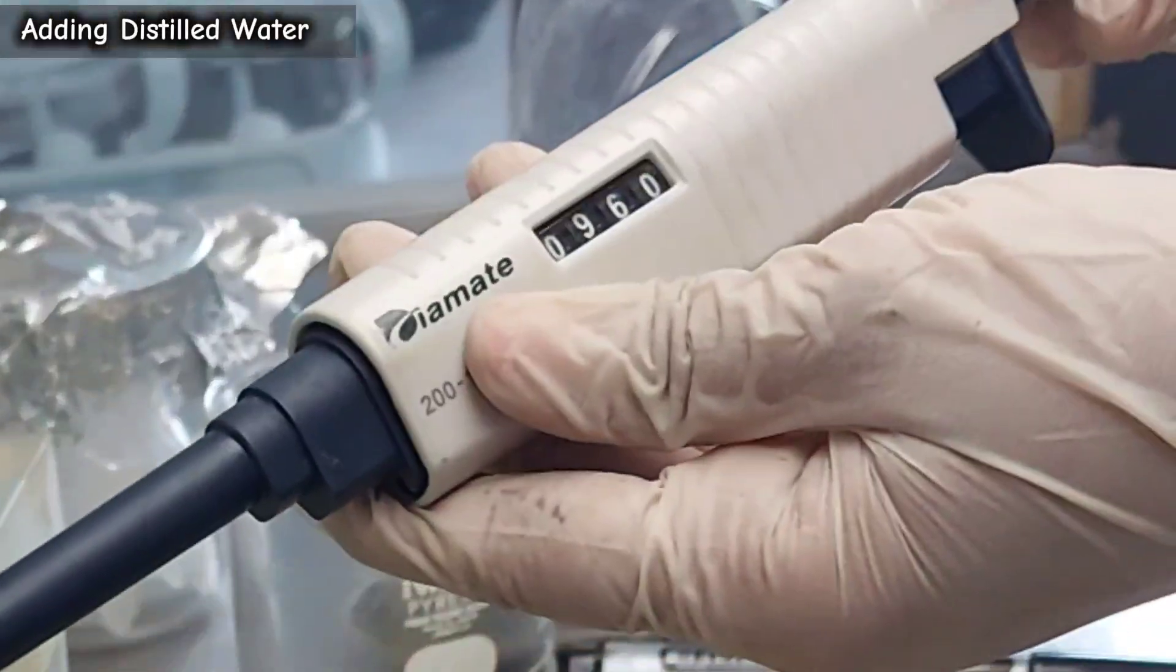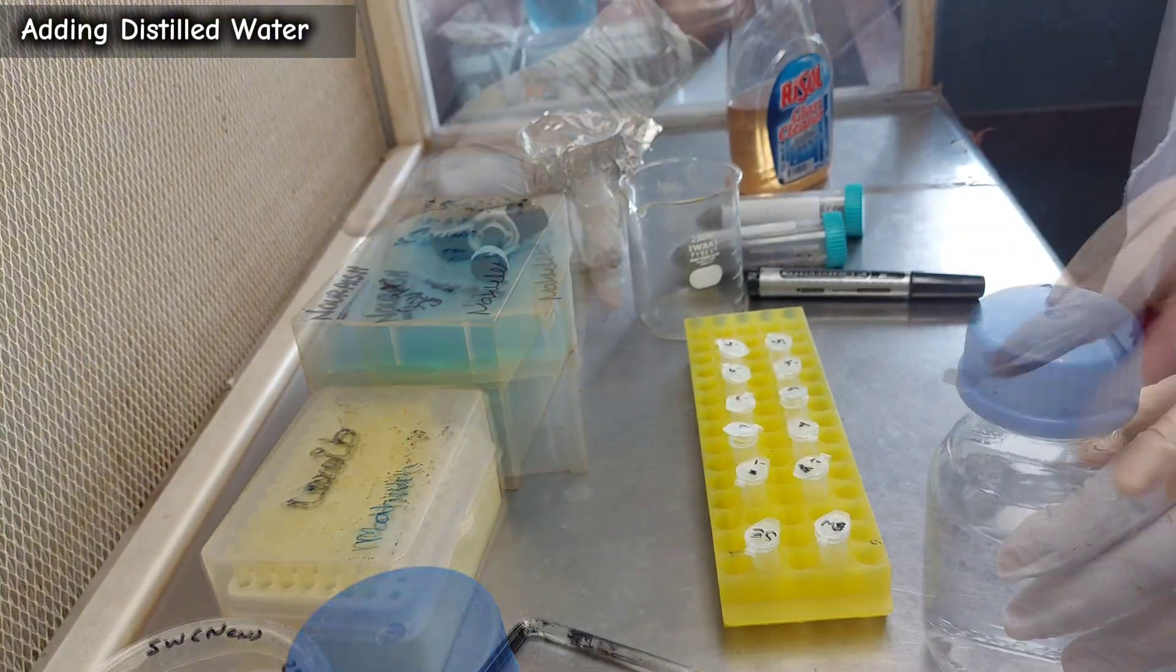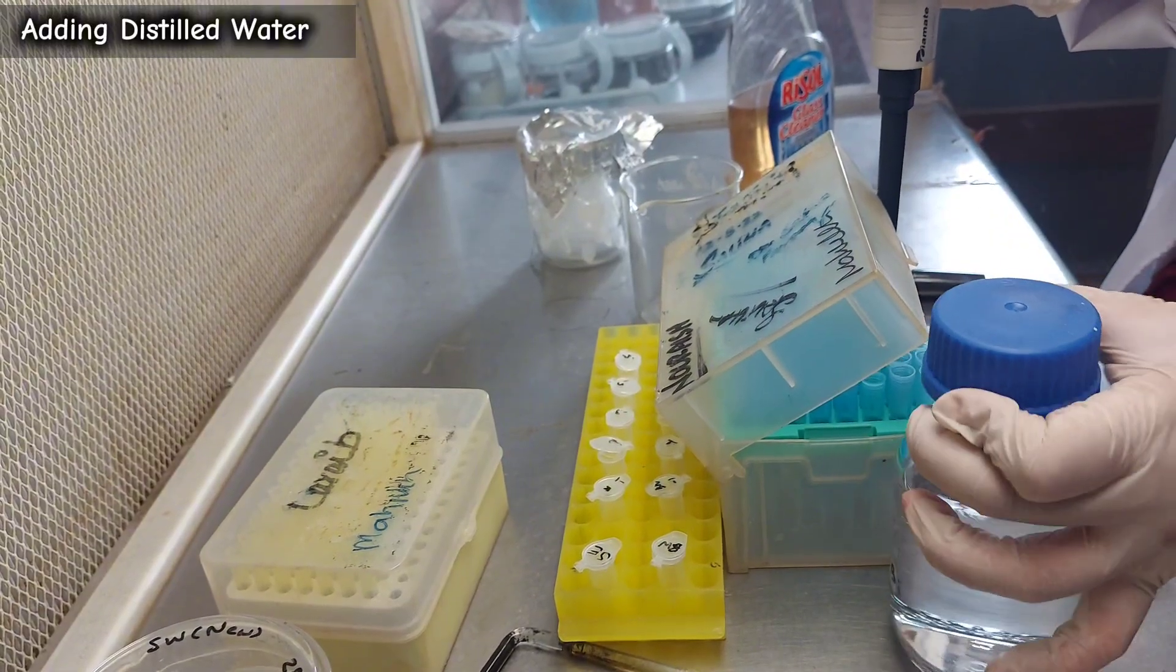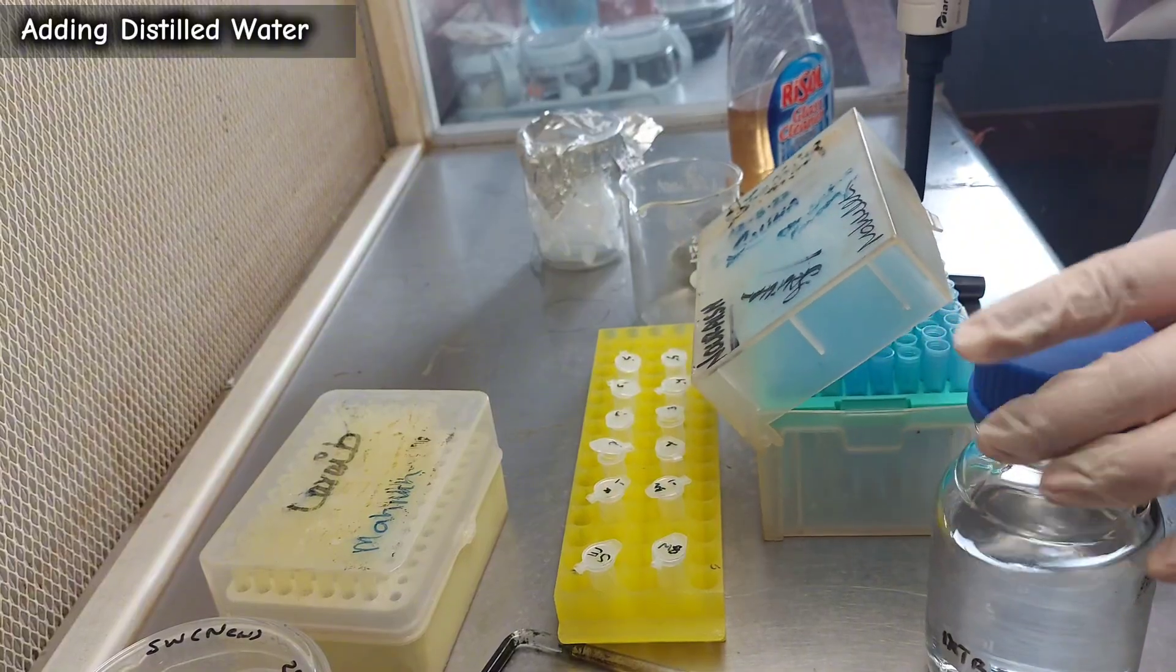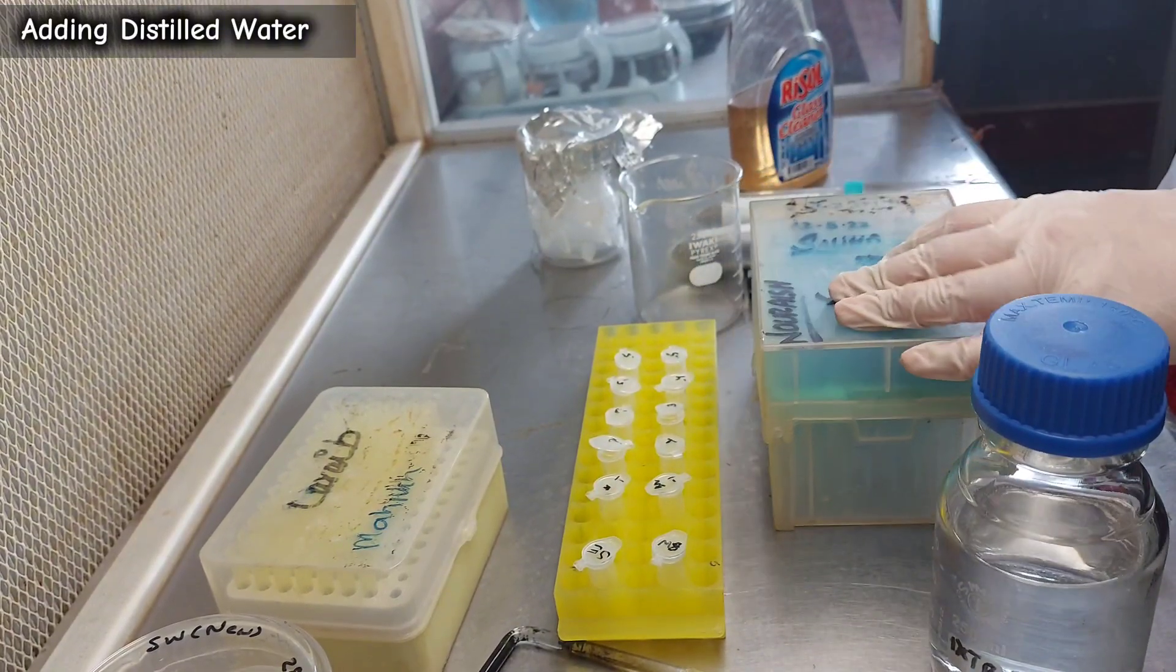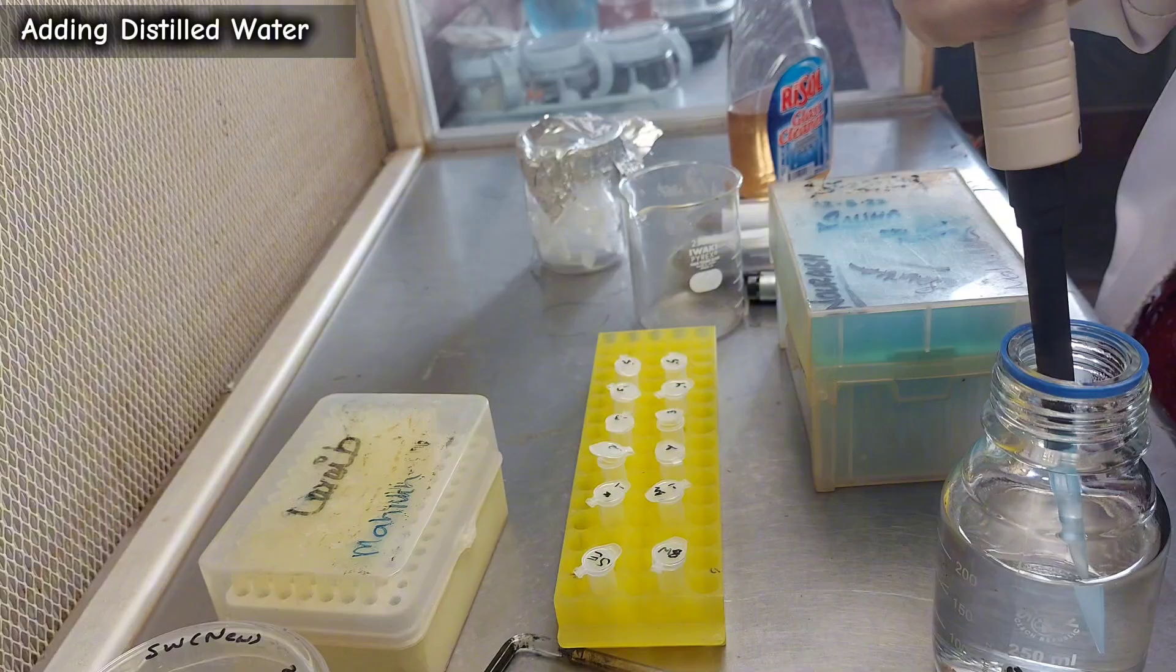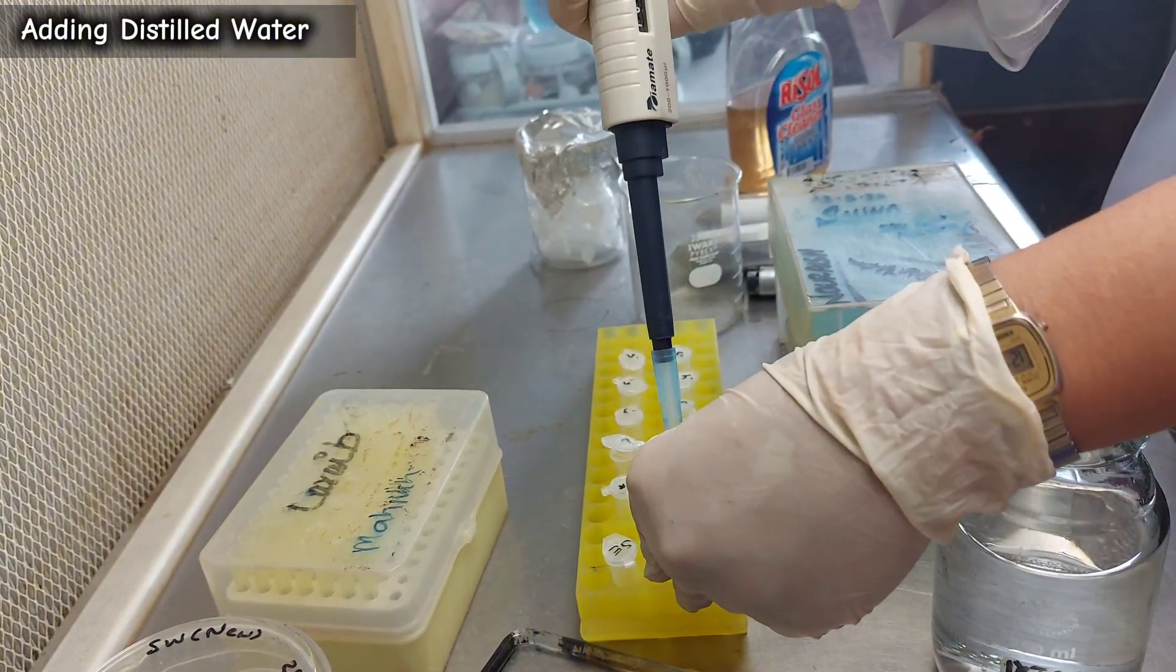Set your micropipette to 1000 microliters and use a blue tip to add distilled water. Fill the stock Eppendorf tubes first.